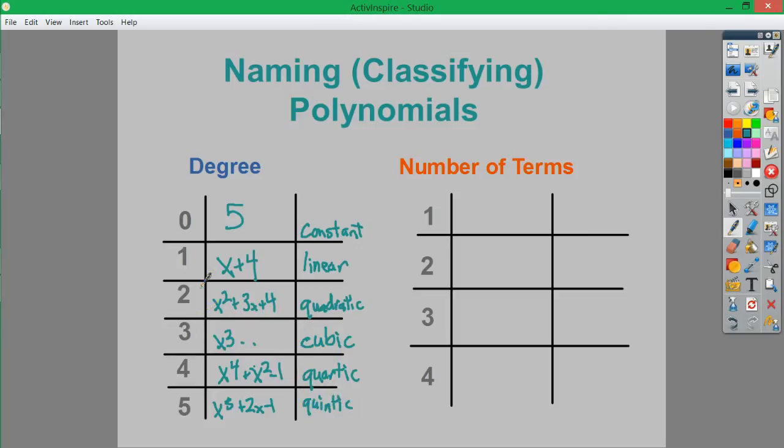And it goes on and on. At some point, it ends up being that they refer to things as degree of and the number. There's no prefix after a certain point. Usually around 5, they stop using a prefix.